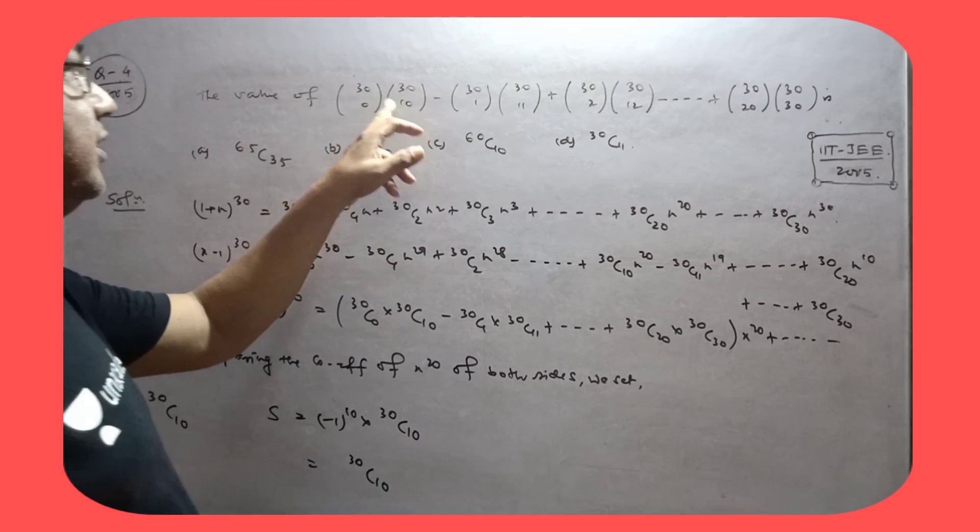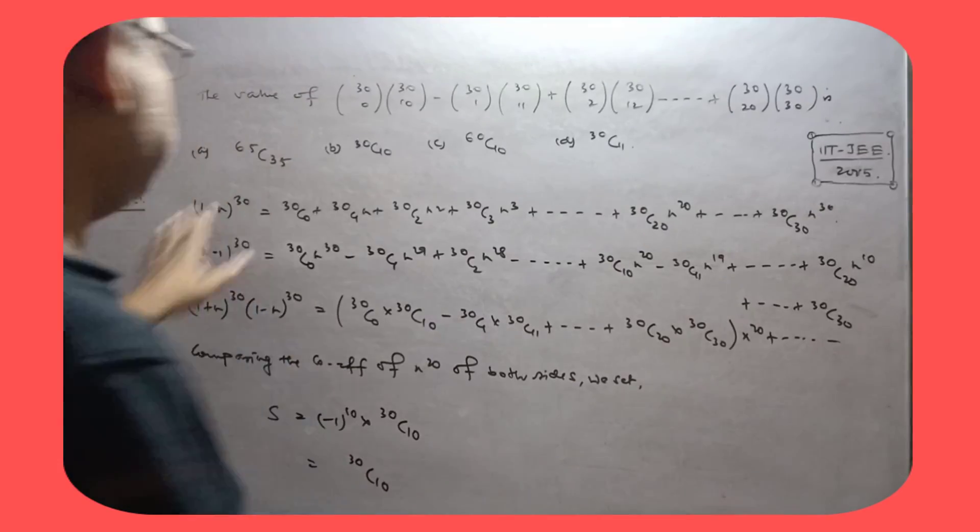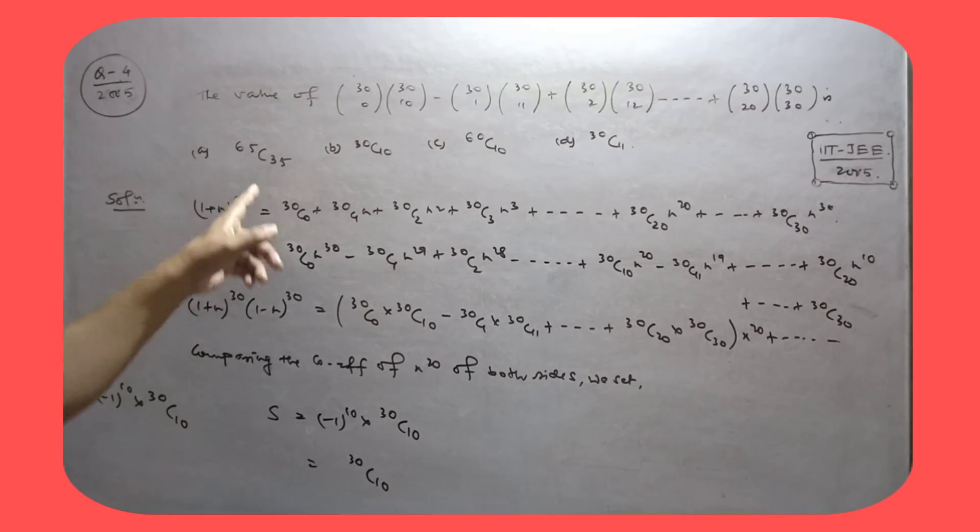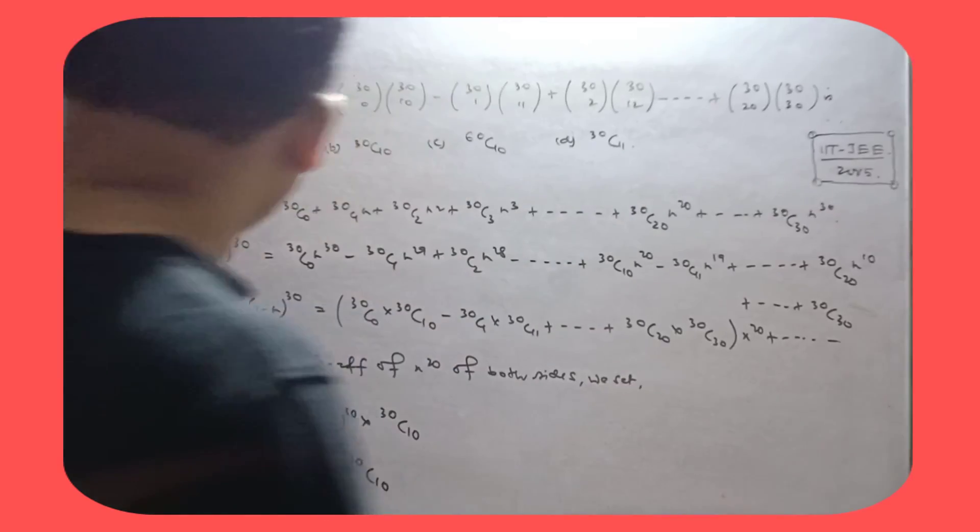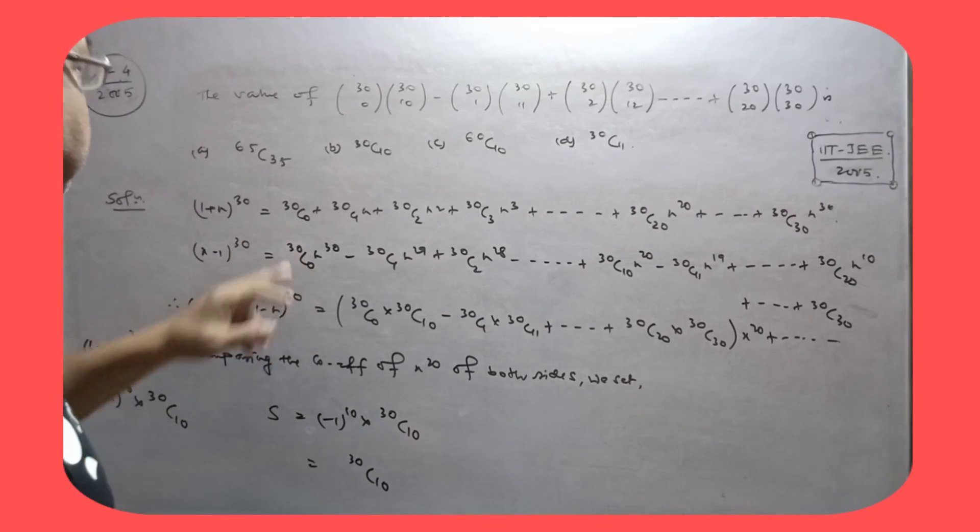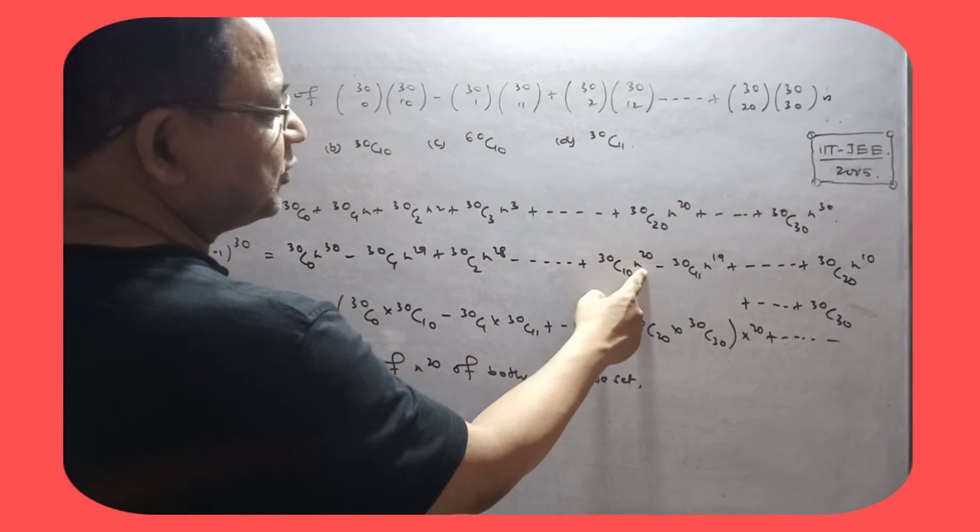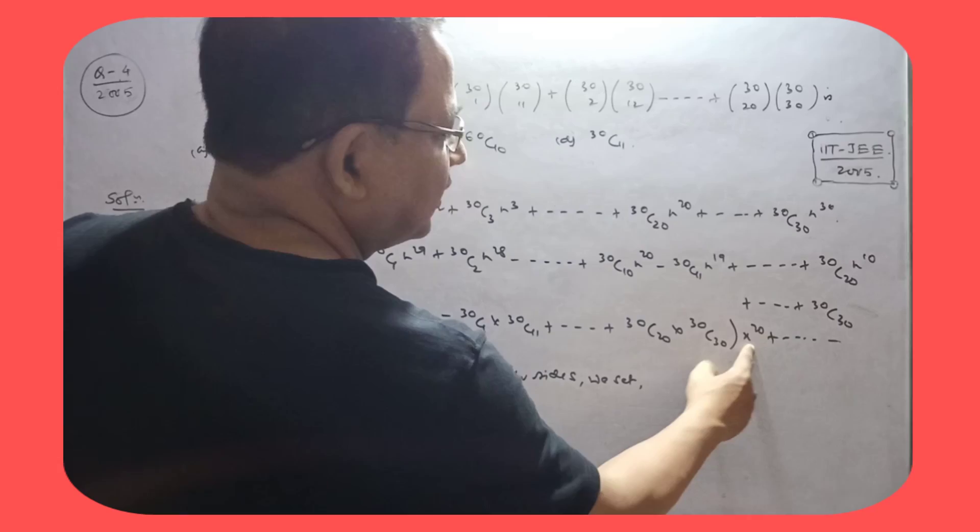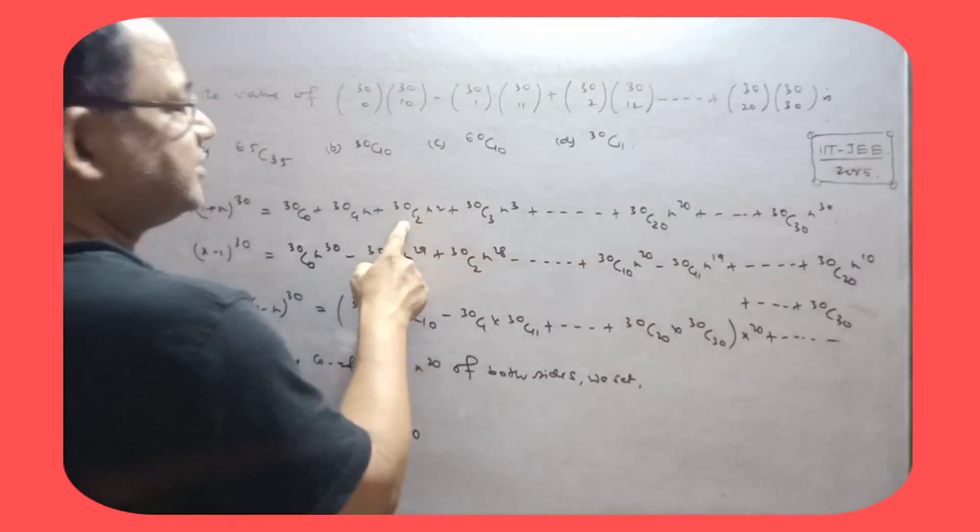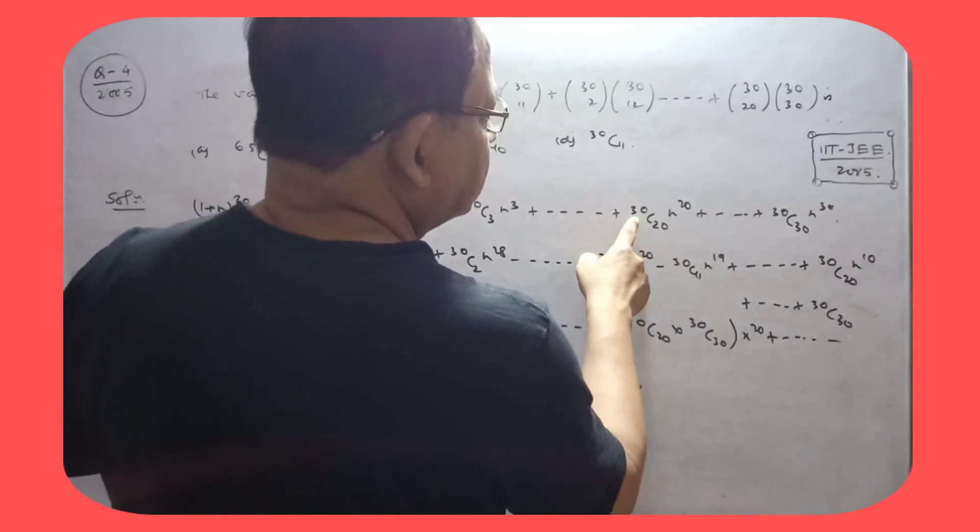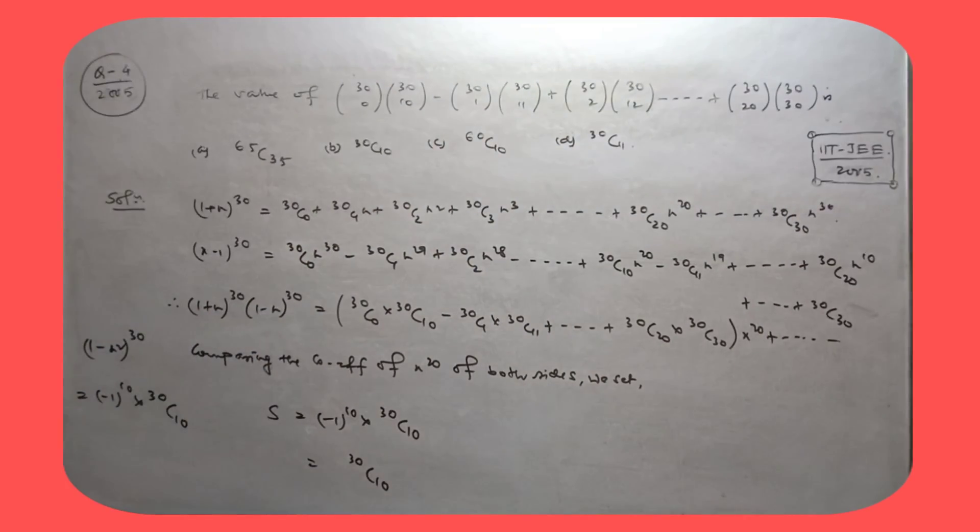The value of this: 30C0 times 30C10, 30C1 times 30C11, like this. (1 plus x) to the power 30 equals this, and (x minus 1) to the power 30 equals this. Multiply these two. 30C0 into 30C10, x index 20, this is x index 20, this is x index 20, and so on. 30C1 next term, 30C2 next term, 30C12, 30C20 into 30C30, x index minus 10 to 10.